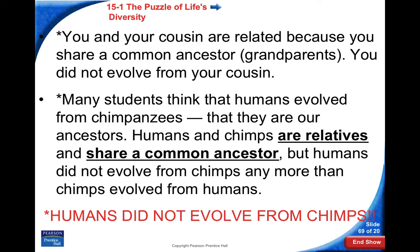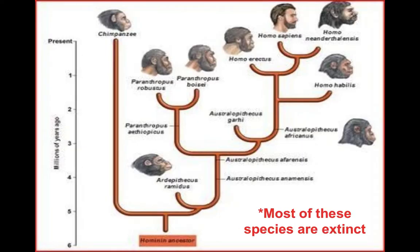You did not evolve from a chimpanzee. Just as you and your cousin are related because you share common ancestors — your grandparents — you did not evolve from your cousin. Many students think humans evolved from chimpanzees or gorillas, but that's not true. We are related to them because we share a common ancestor. They're essentially like our cousins — humans and chimpanzees both evolved from some common ancestor about six million years ago. The tree of life shows different organisms we are related to: Homo sapiens and chimpanzees branch apart about five to five and a half million years ago.